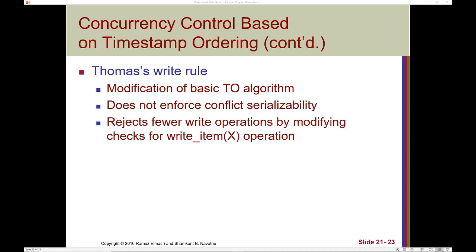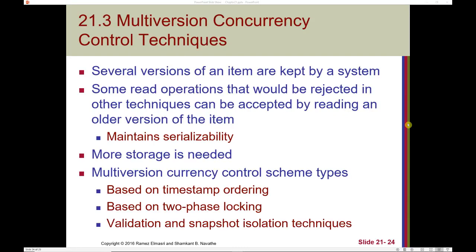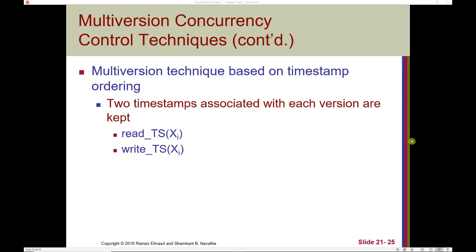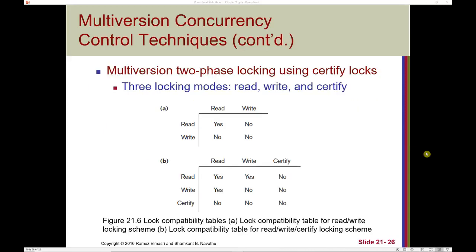A modification of the basic timestamp ordering algorithm is called Thomas's Write Rule — it does not enforce conflict serializability but rejects fewer write operations by modifying how write operations are checked. We can also use multi-version concurrency control (MVCC), in which several versions of an item are kept by the system. Some read operations that would be rejected in other techniques can be accepted by reading an older version. One drawback is that more storage is needed. MVCC schemes can be based on timestamp ordering, two-phase locking, validation, or snapshot isolation.